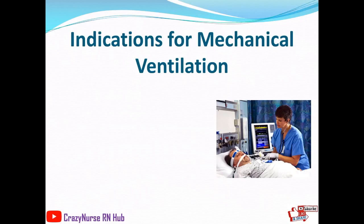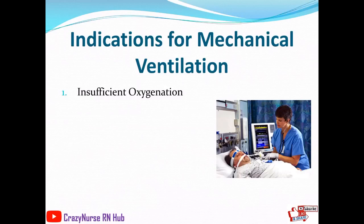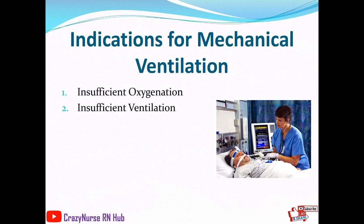What are the indications for mechanical ventilation? First is insufficient oxygenation — inadequate oxygenation, known as hypoxemia, can impact the functionality of tissues and vital organs if left untreated. Mechanical ventilation treats hypoxemia by providing sufficient oxygen into the lungs for distribution throughout the body. Next is insufficient ventilation — healthy lungs work to remove carbon dioxide, and mechanical ventilatory support is indicated if the patient has inadequate ventilation, common in apnea, chronic respiratory acidosis such as COPD, and neuromuscular disorders.